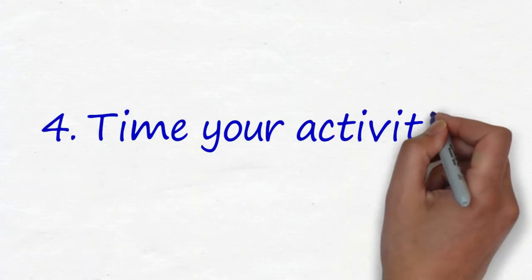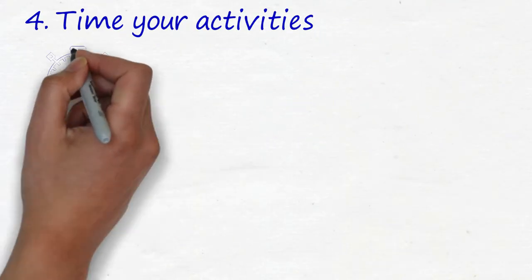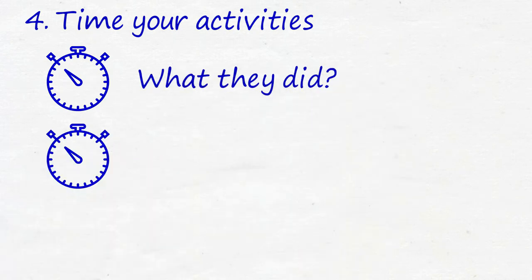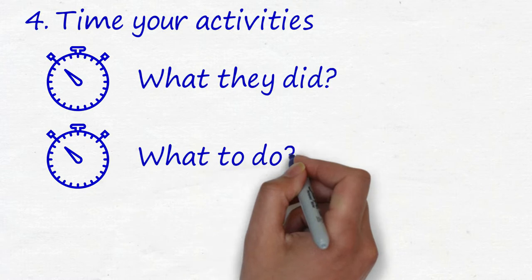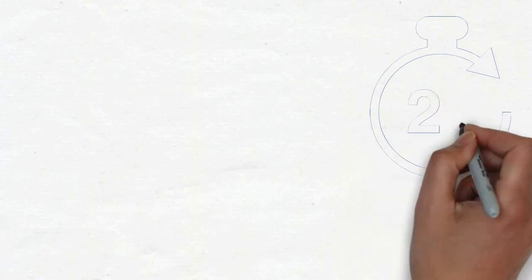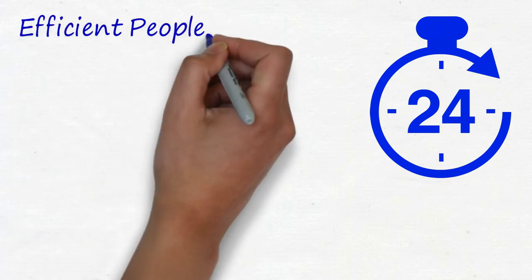Number four, time your activities. Busy people don't time their activities and estimate the time they spend on activities. It is why busy people are in a rush and tend to multitask. Time is an irreplaceable resource to humans, so please do not waste it. Efficient people know this already.